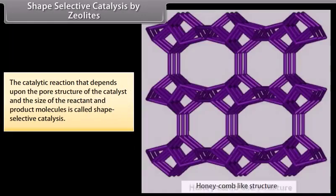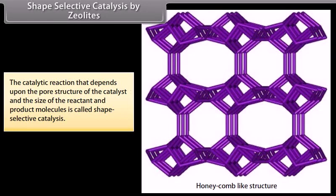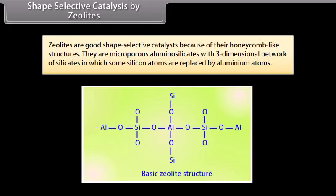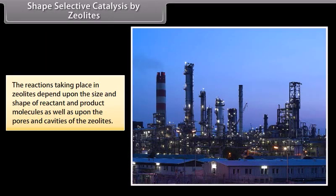Shape selective catalysis depends upon the pore structure of the catalyst and the size of reactant and product molecules. Zeolites are good shape-selective catalysts because of their honeycomb-like structures. They are microporous aluminosilicates with a three-dimensional network of silicates in which some silicon atoms are replaced by aluminum atoms. Reactions in zeolites depend upon the size and shape of reactant and product molecules as well as the pores and cavities of the zeolites. Zeolites are used as catalysts in petrochemical industries for cracking of hydrocarbons and isomerization.